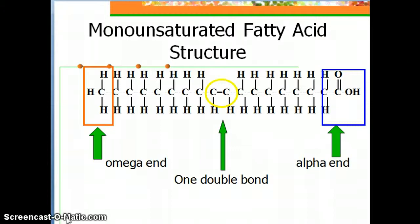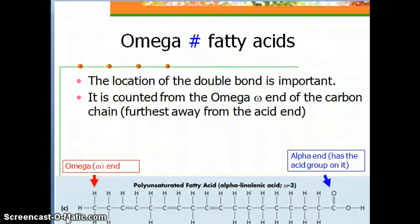Why are omega fatty acids essential to you? Your body can only produce double bonds after the ninth carbon. So your body can make an omega-9 fatty acid on its own. But if we look at an omega-3 fatty acid — counting 1, 2, 3 carbons from the omega end — the double bond is before the ninth carbon, so your body cannot make it. Your body has to take it in from an outside source, such as fish oil or flaxseed oil.